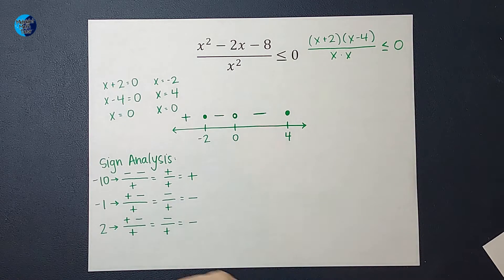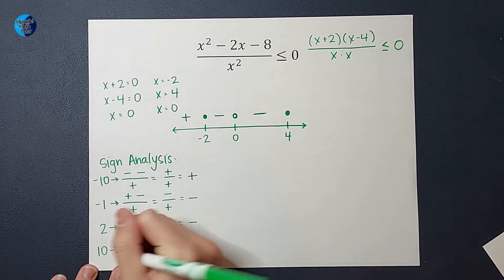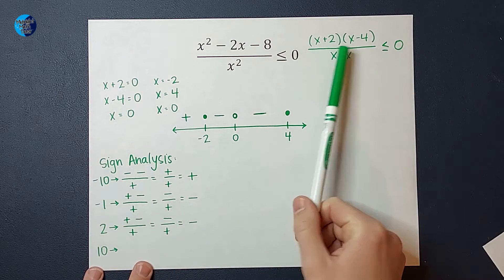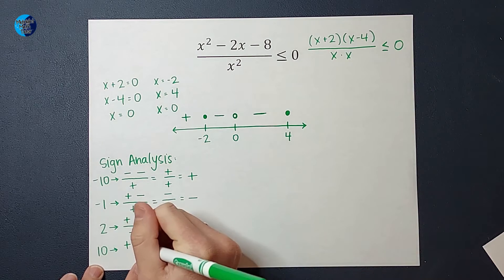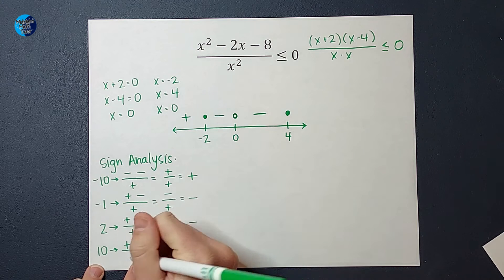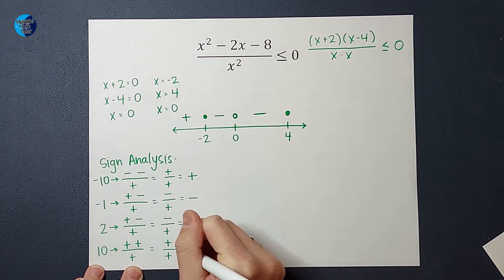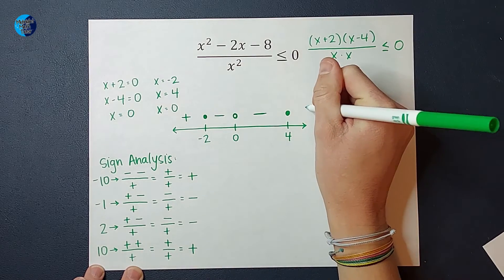Let's pick a number bigger than 4 now. Let's just pick 10. So when I plug in 10 for x, on top, I get 10 plus 2, which would be positive. 10 minus 4 would be positive. On bottom, I'd have a 10 times 10, which would be positive. And all those positives would end up being positive.